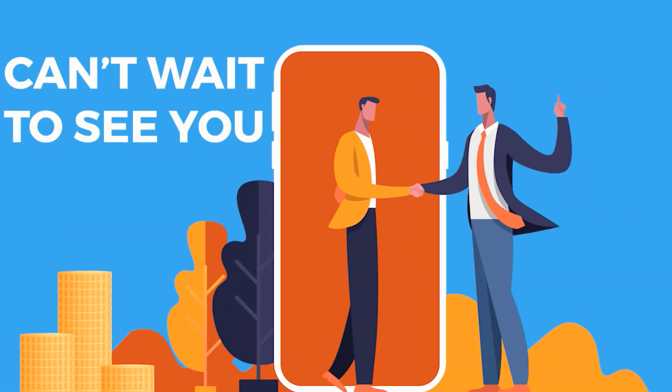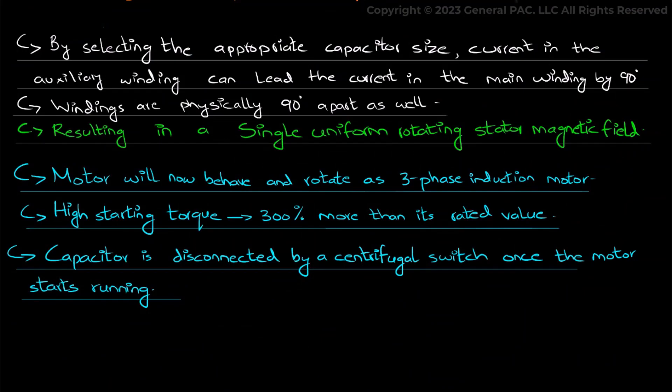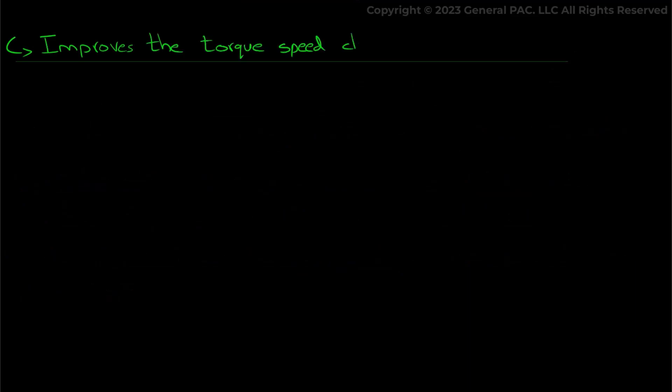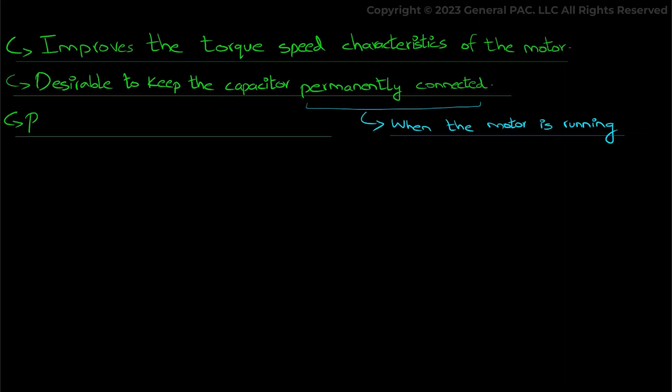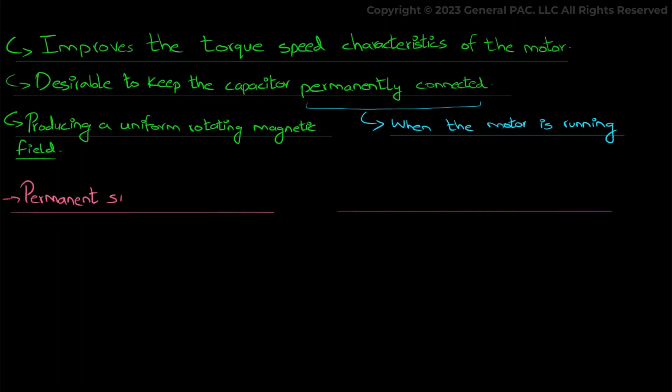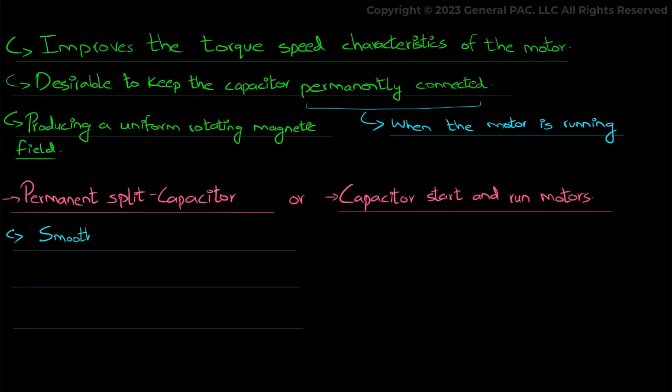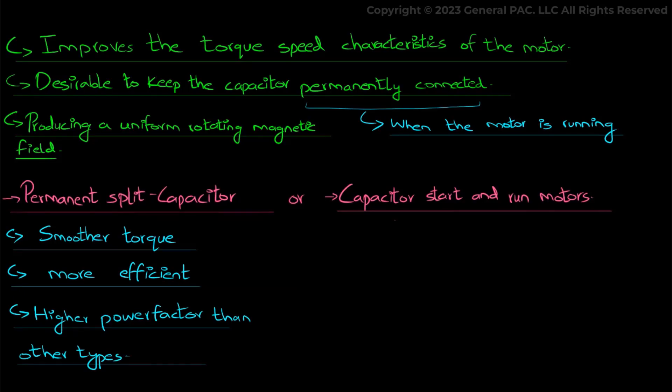Now another important aspect of inserting a capacitor is that it improves the torque speed characteristics of the motor itself. To such an extent that it is desirable to leave the capacitor permanently connected when the motor is running. And this produces a perfectly uniform rotating magnetic field. And these types of motors are known as a permanent split capacitor or a capacitor start and run motors. They provide smoother torque and are much more efficient and have a high power factor compared to other types of single phase motors.